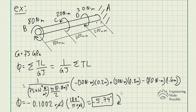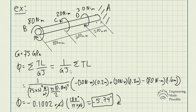This is how you solve the angle of twist when dealing with multiple torques applied along a shaft — you sum each angle of twist with respect to each torque applied at specific locations along the shaft. Just make sure to use a consistent sign convention: in this case, clockwise is negative and counterclockwise is positive throughout your calculations.